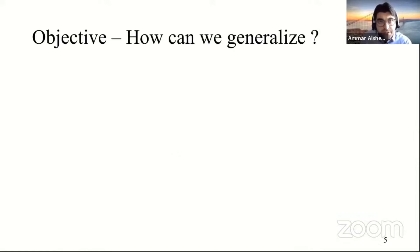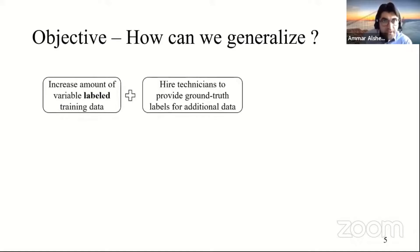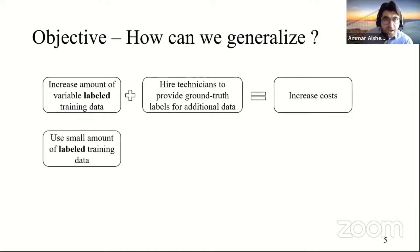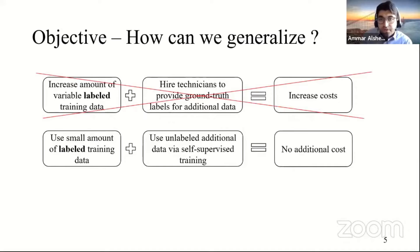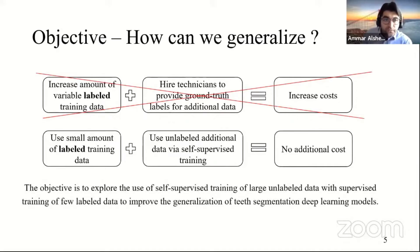And how can we generalize our training or our models? One idea is to increase the amount of variable labeled training data. This will require hiring more technicians to provide ground truth labeling for this additional data. However, this will increase our cost. An alternative idea could be to use a small amount of labeled training data and add to that a large amount of unlabeled additional data and then use self-supervised training to leverage this data. This will avoid an additional cost. So we can frame the objective of this talk as to explore the use of self-supervised training of large unlabeled data with supervised training of few labeled data to improve generalization of teeth segmentation deep learning models.